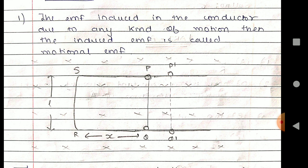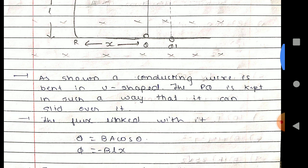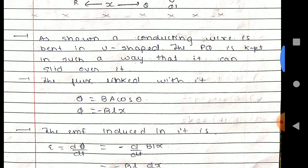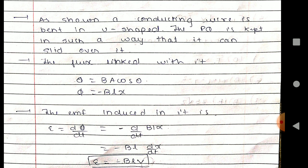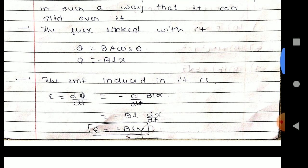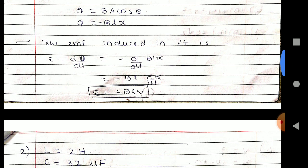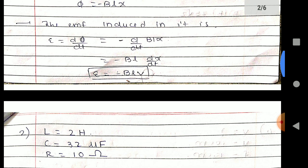Due to any kind of motion, then the induced EMF is called motional EMF. As shown, a conducting wire connecting wire is bent in U shape. PQ is kept in such a way that it can slide over it. The flux linked with theta: BA cos theta, and phi equals BLx.